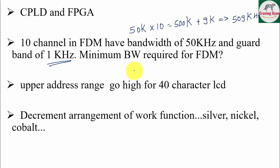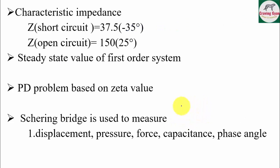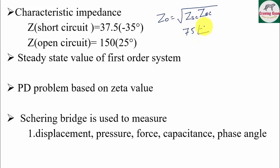They also asked a question based on upper address range for a 40-character LCD. They asked about the decrement arrangement of work function for silver, nickel, cobalt, and one more material. They also asked about characteristic impedance — normally it is given by √(Z_SC × Z_OC), but they gave a complex value of 75 at an angle of minus 5, and since the calculator is not allowed, solving this becomes very challenging.